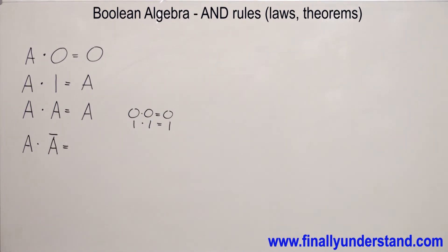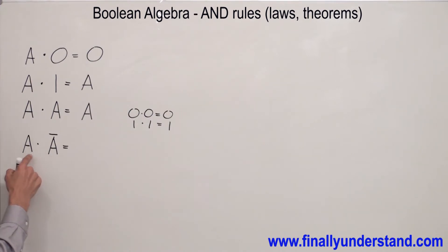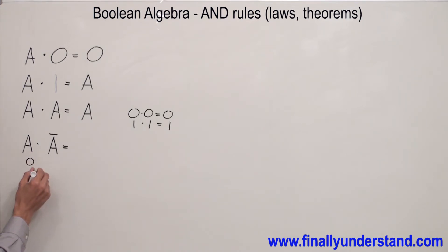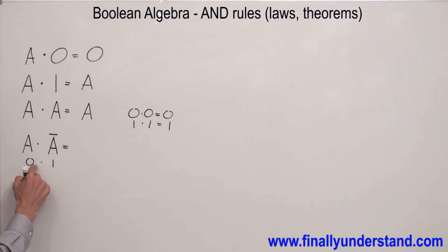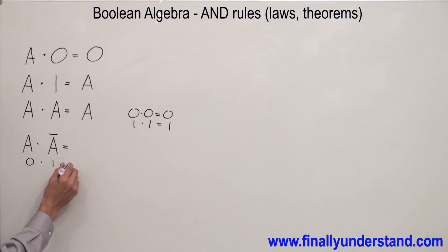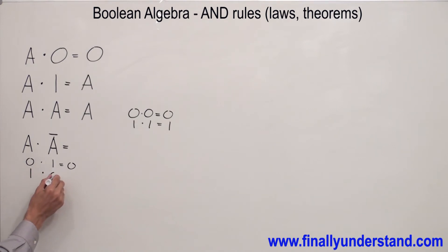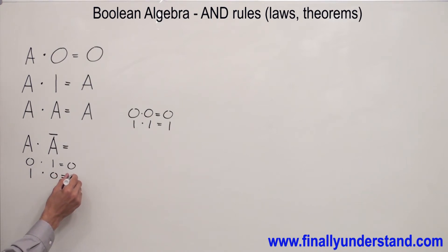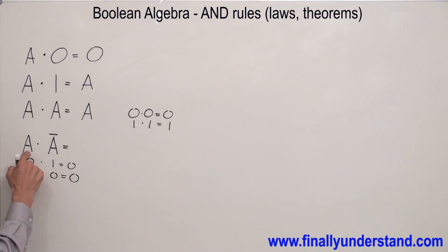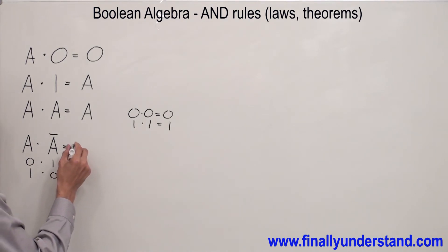Now, if I have a situation where I have to multiply A times NOT A — remember that A is the variable. If A, for example, is zero, then NOT A at the same moment is going to be one. Zero times one gives me zero. If A is equal to one, NOT A at the same moment is going to be zero. One times zero gives me zero.